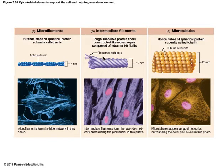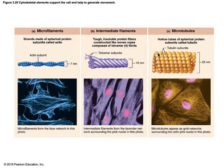Intermediate filaments are protein fibers that are very strong and give structure to the cell. Microtubules are created by structures called tubulins, and this helps with transporting things through the cell.